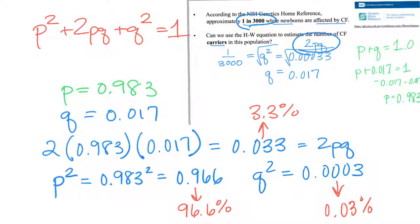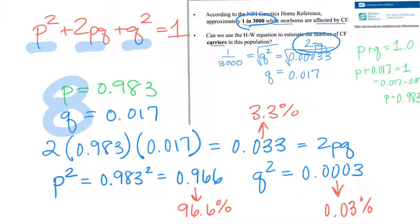When solving word problems using Hardy-Weinberg equilibrium, remember to identify what you know and what you're trying to figure out. Know your terms: p squared, 2pq, q squared, p, and q. If you can figure out one of those values, you can calculate all the rest.